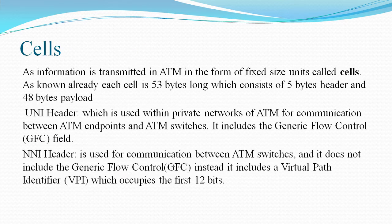Cells. The basic data unit in an ATM network is called a cell. A cell is only 53 bytes long, with 5 bytes allocated to a header and 48 bytes carrying the payload.